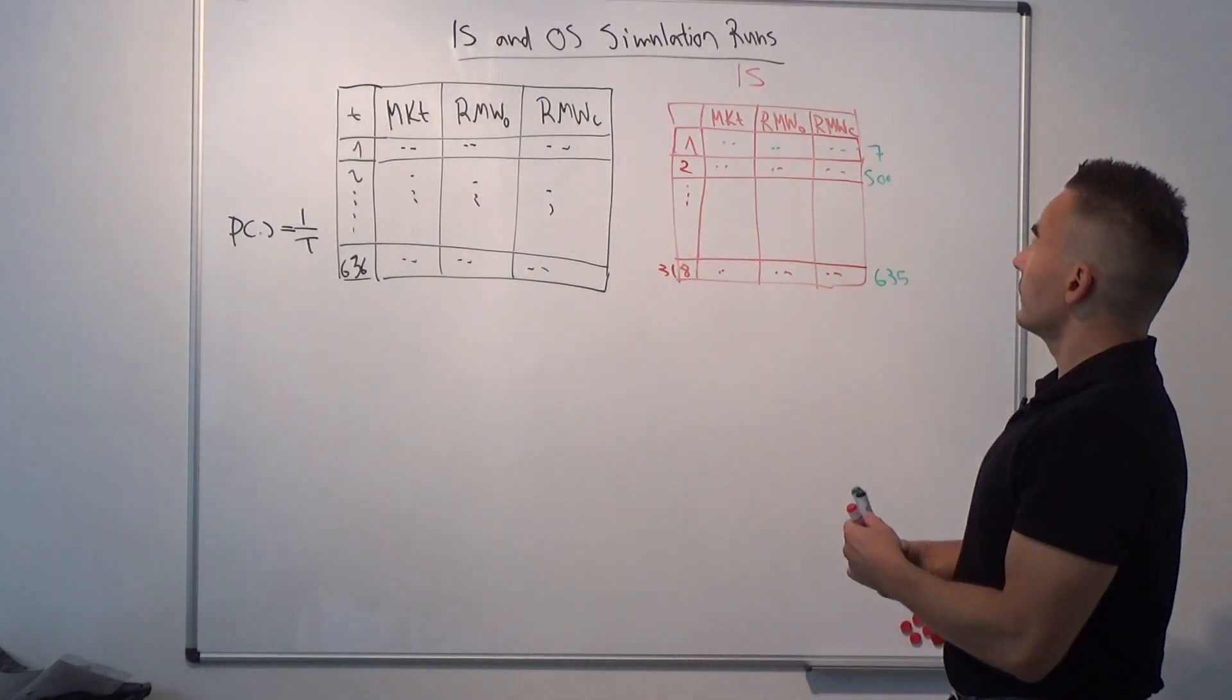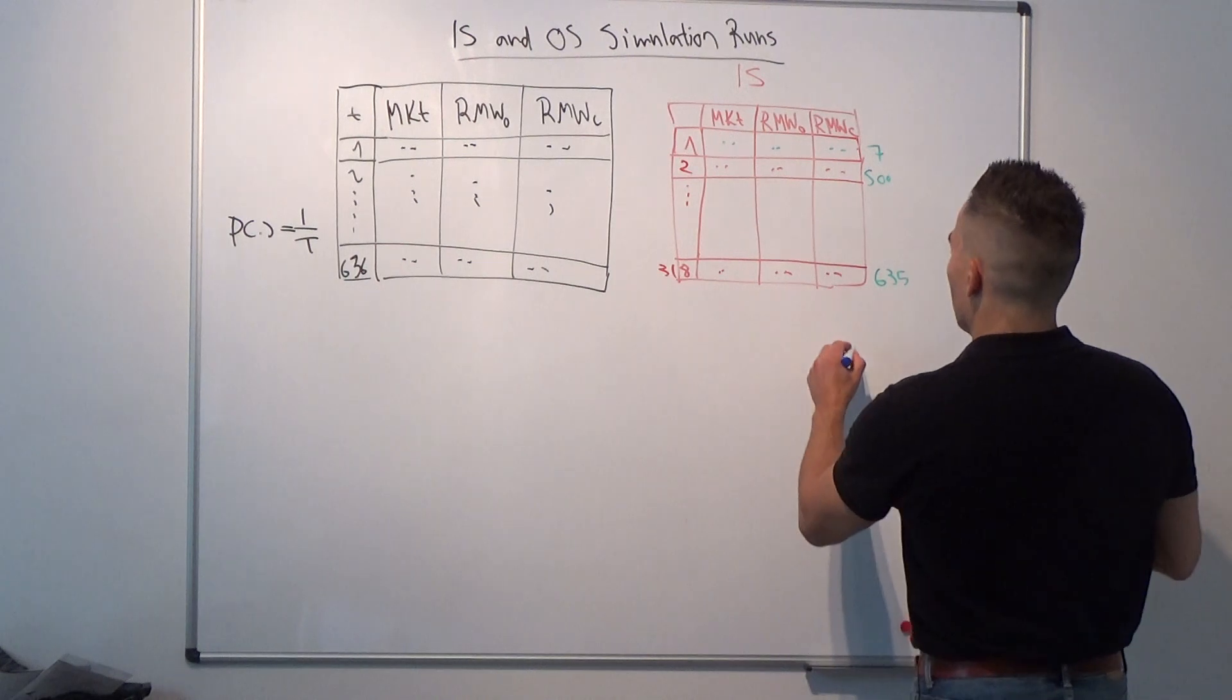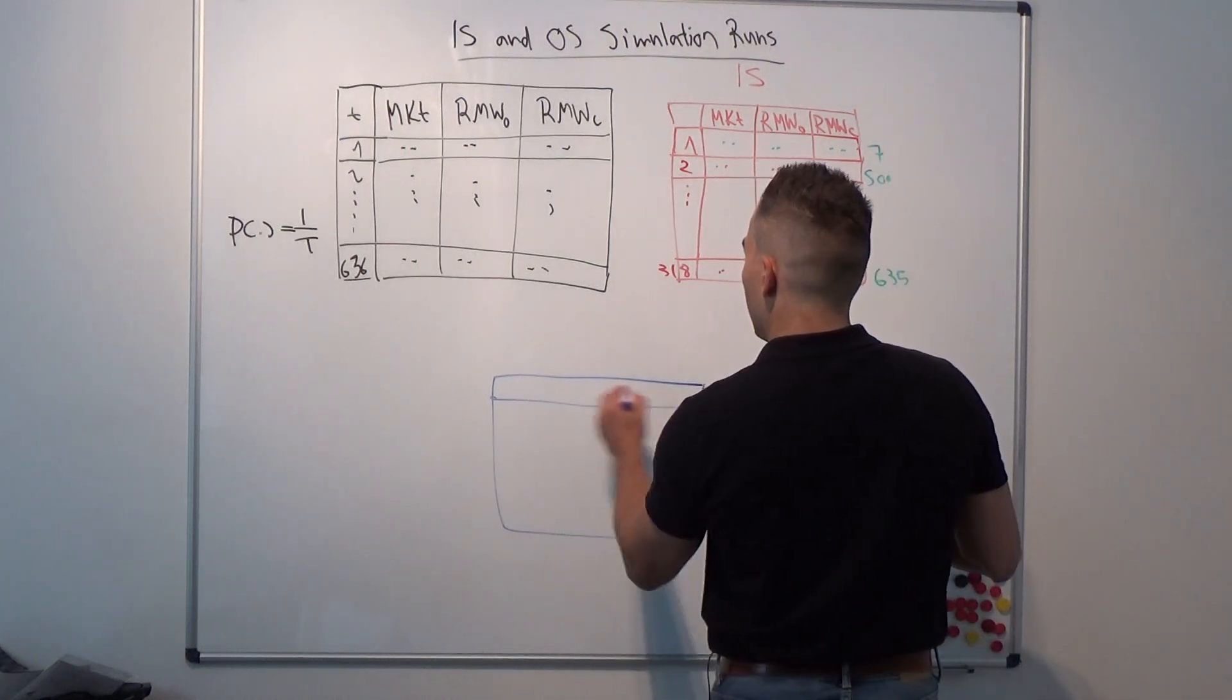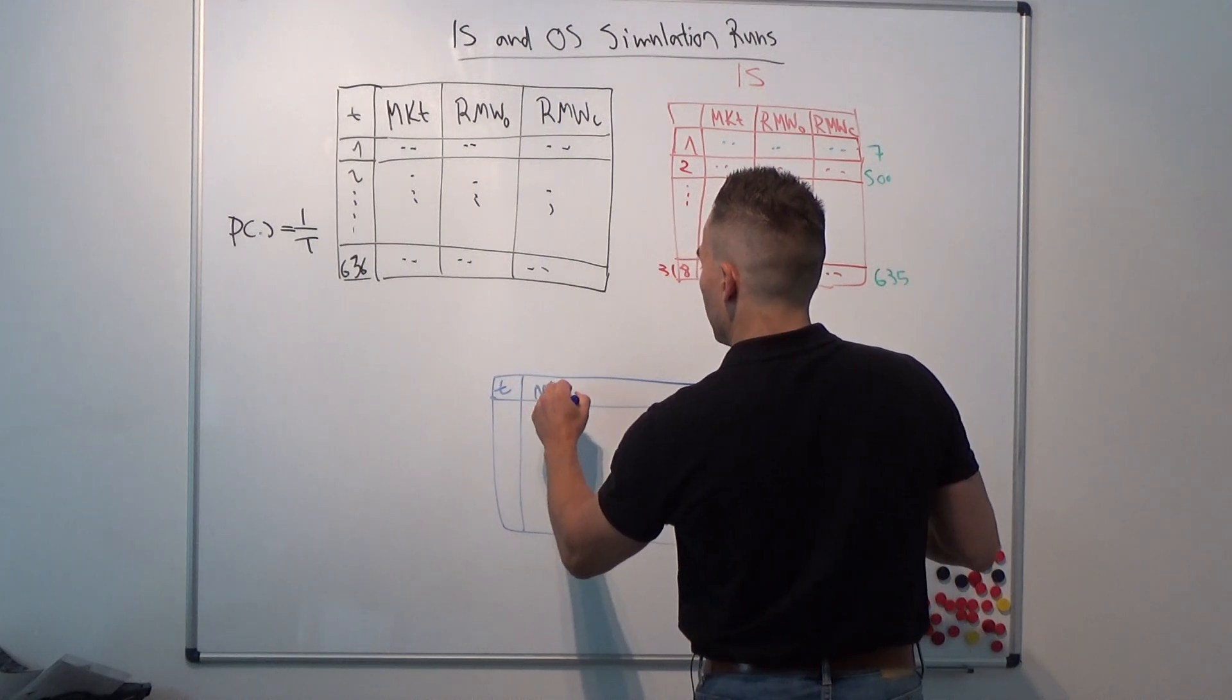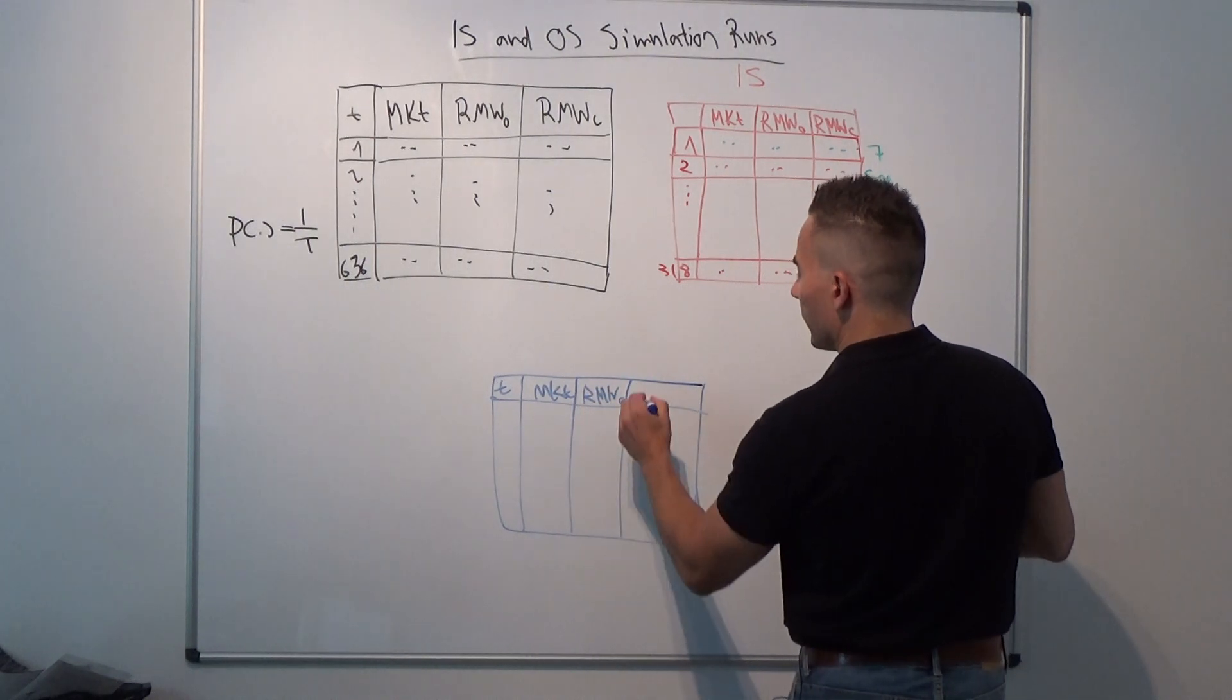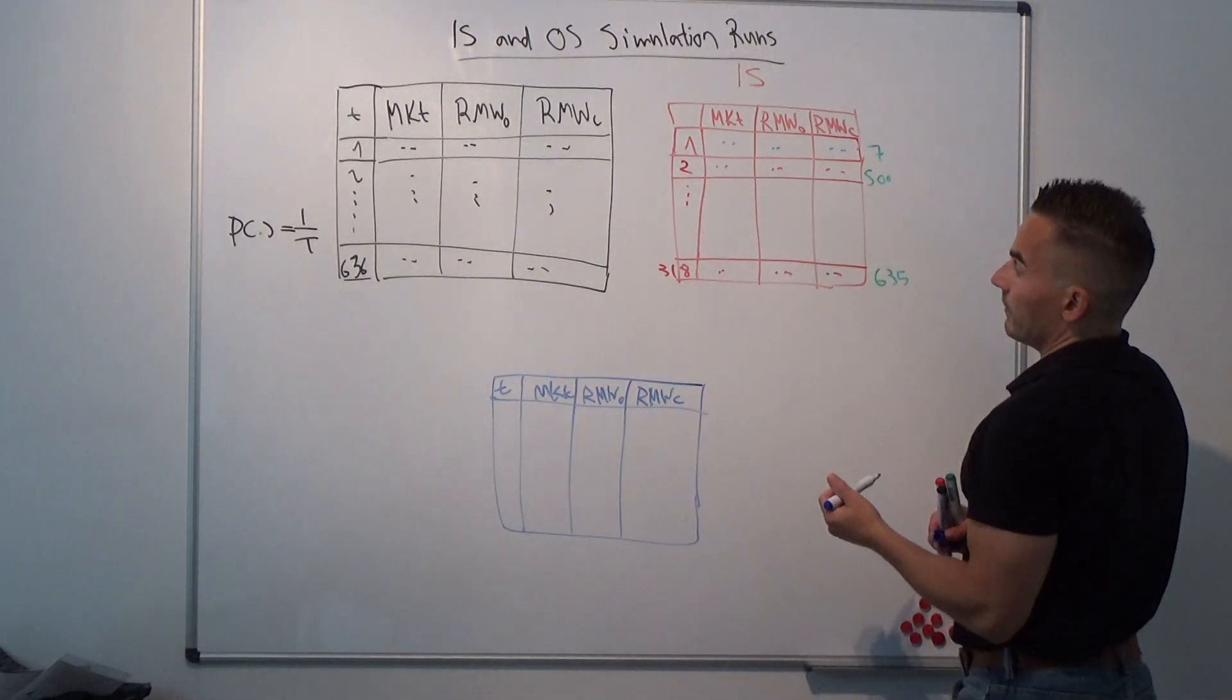The reason is they construct the out-of-sample matrix in such a way. Again, let's get our factors straight here: t-index, MKT for the market factor, RMWO for the operating profitability factor, RMWC for the cash profitability factor.